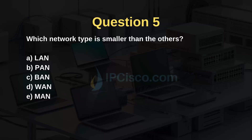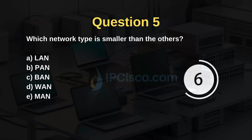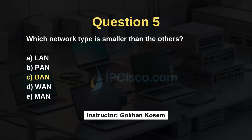Which network type is smaller than the others? LAN, PAN, BAN, WAN, or MAN? The answer is C — BAN, Body Area Network.